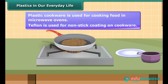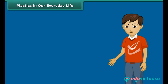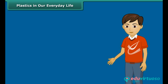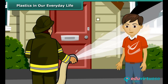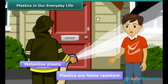Have you ever noticed the frying pan for cooking dosa? You would have seen a black coating on it. It is teflon, which is a special plastic on which oil and water do not stick. Thus it is used as non-stick coating on cookware. You would be amazed to know that there are also fireproof plastics — the uniforms of firemen have a coating of melamine plastic to make them flame resistant.